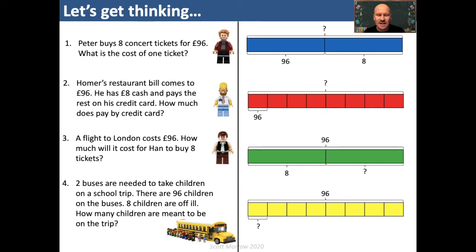Question three: A flight to London costs £96. How much will it cost for Han to buy eight tickets? Well in this case, we know that each flight costs £96 and he's looking to buy eight of those tickets, which means we're looking for a bar that's split into eight parts where each of the parts is 96. And you can see that's the red bar. Which means for question four: Two buses are needed to take children on a school trip. There are 96 children on the buses. Eight children are off ill. How many children are meant to be on the trip? Well in that question, the two buses doesn't really have anything to do with the calculation. Because we're interested in the number of children. We know that some children are on the bus and some are ill, so we've got two parts. We know one of those parts is 96 — the children who are on the buses — and we're looking for the whole amount. So that relates to the blue bar.